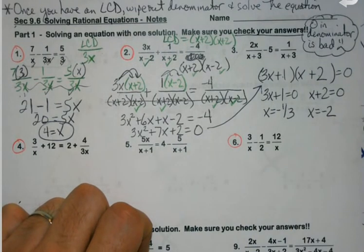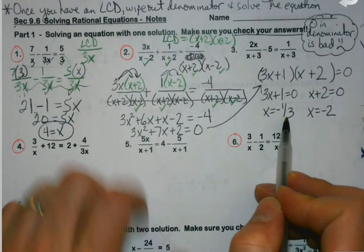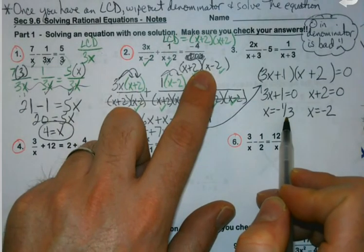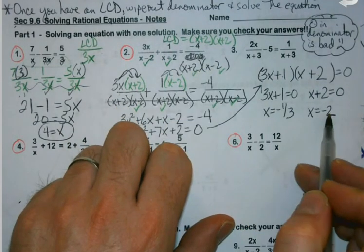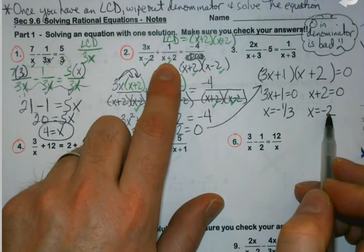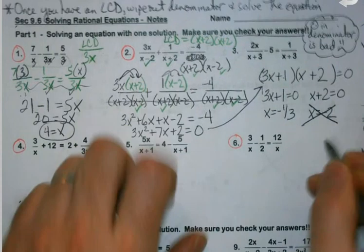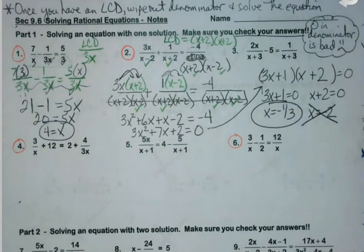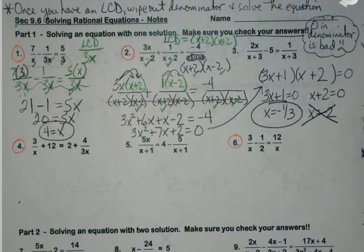Now, before you just circle it and say okay I'm good and go on to the next one, you can have two answers for some of these. But let's go back and look for a minute. If I take negative 1 third, that's not going to cause 0. That's fine. Negative 2. Negative 2 minus 2, that's negative 4. Negative 2 plus 2, zero. Bad. I only have one answer. Is it possible sometimes that both of your answers will cause a problem? Yes. So you may have one solution, you may have two, you may have none. I can't guarantee this.